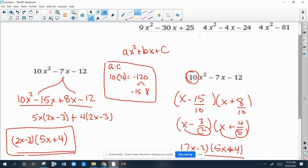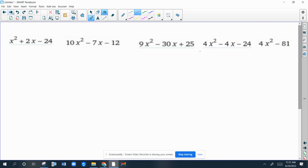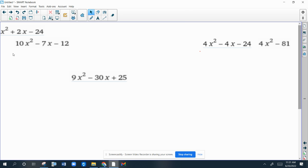So, the next one. We took care of this. Took care of this. The next one is just like this one. You can just do 9 times 25, and find factors of that that add up to negative 30. That's a lot, but you can do it that way. The other way is, this is a special type of factoring. This is a special type of quadratic. It's called a perfect square trinomial.